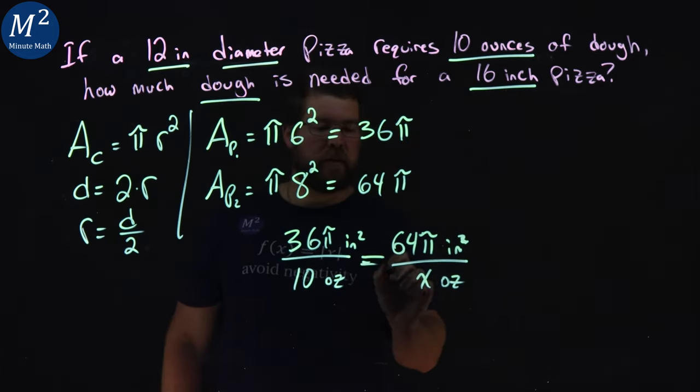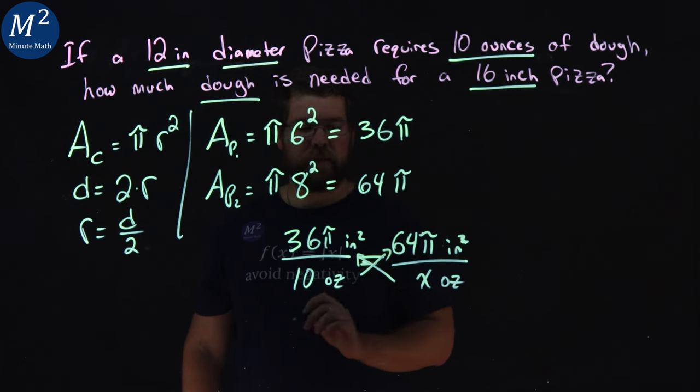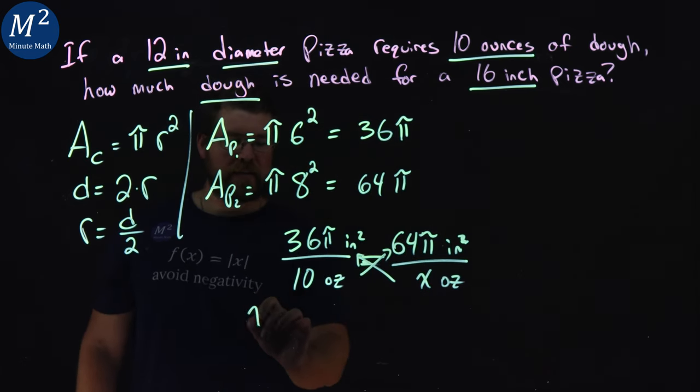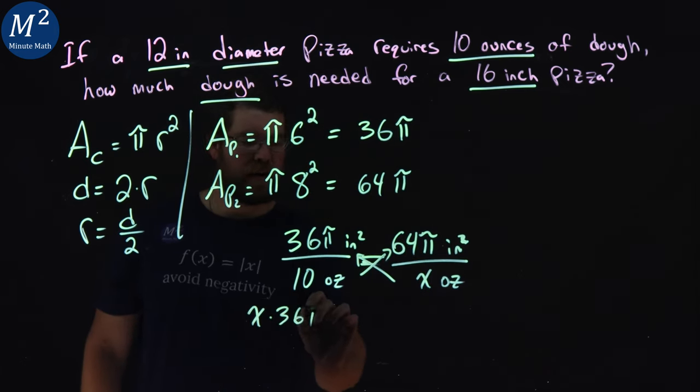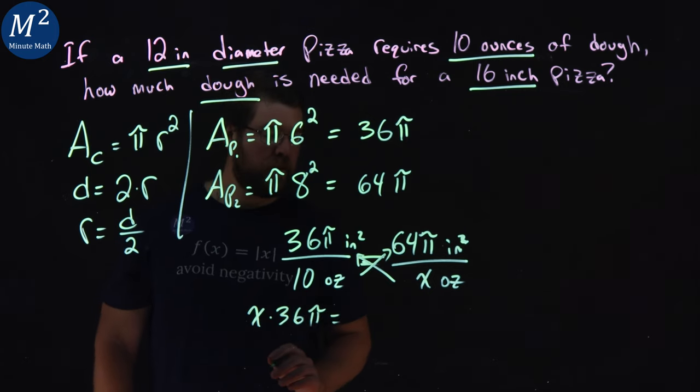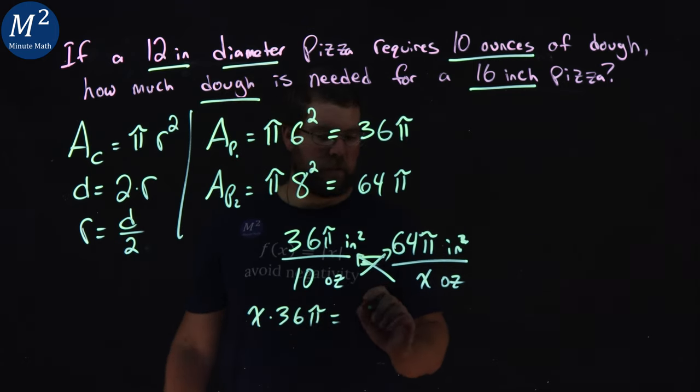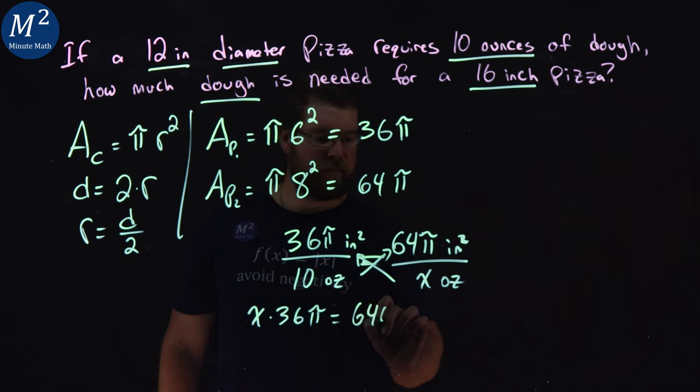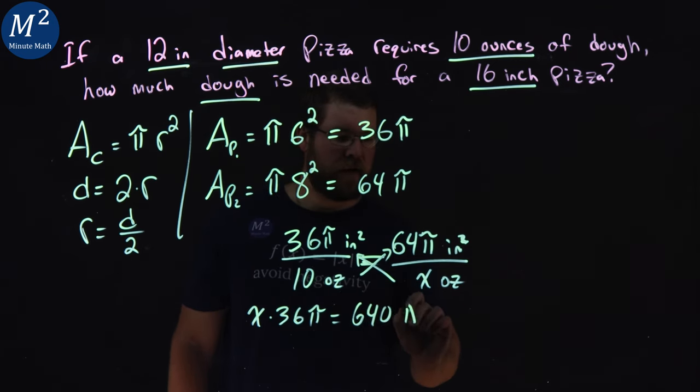So, I'm going to multiply across here, up and over. So, we have here, x times 36 pi equals 10 times 64, which is 640. Right? 10 times 64 is 640 pi.